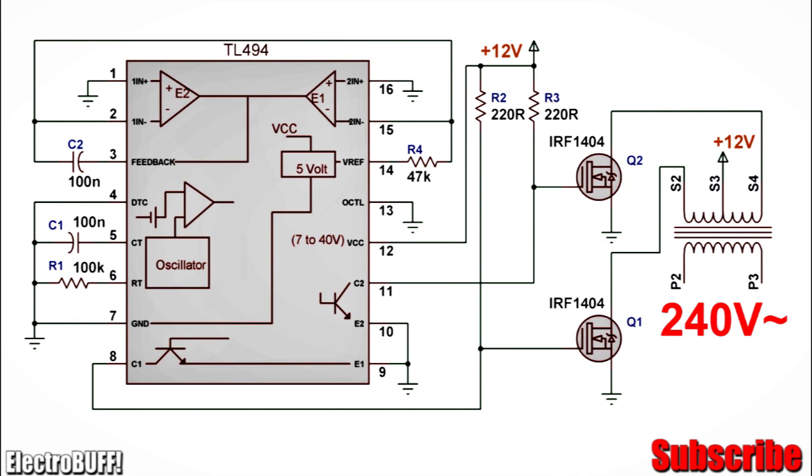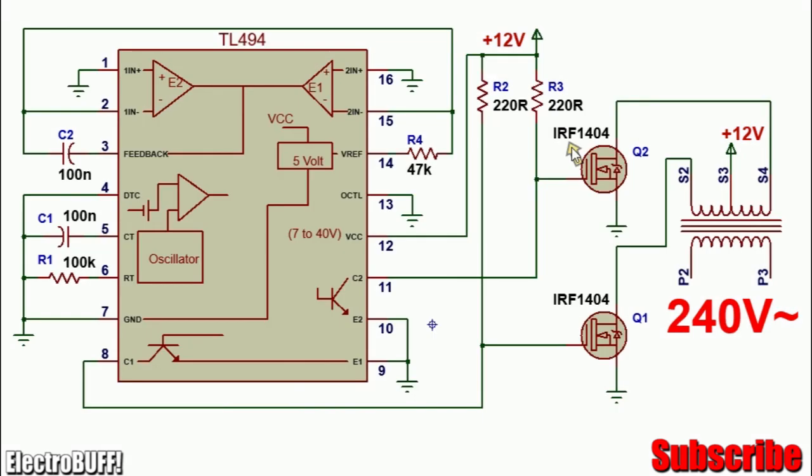The circuit contains just a few components. The IC has two built-in error amplifiers with the pins as 1, 2 and 15 and 16. First off, we need to disable the error amplifiers by pulling down their non-inverting terminals to ground and pulling up the inverting terminals to 5 volts, which is generated by the reference pin 14.